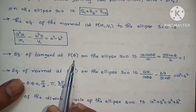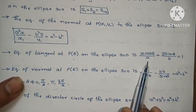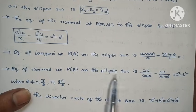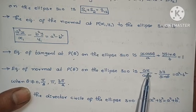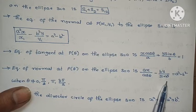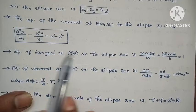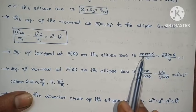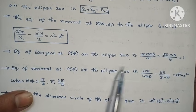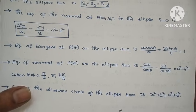At parametric angle theta, the equation of tangent to the ellipse is: x cos theta by a plus y sin theta by b equals to 1. The equation of normal at angle theta is: ax by cos theta minus by by sin theta equals to a² minus b².